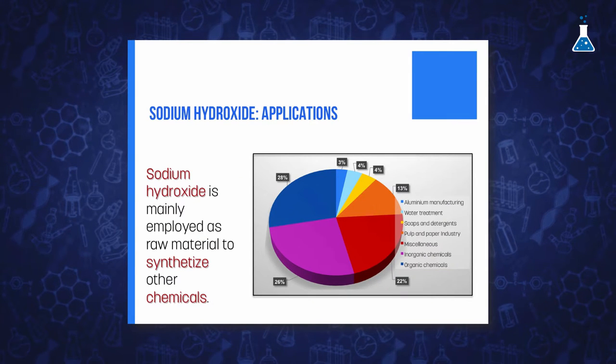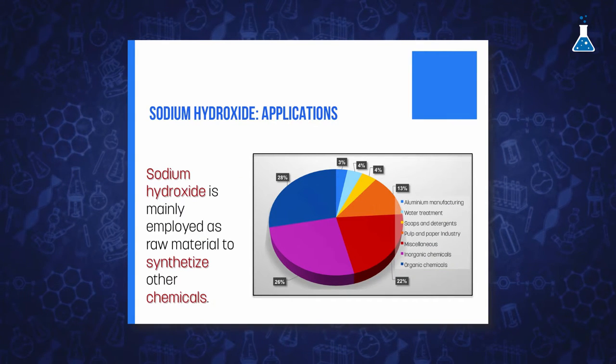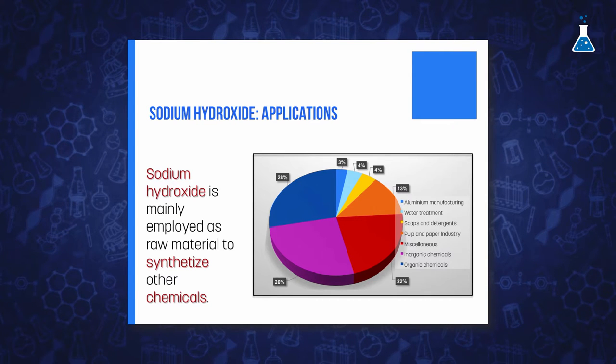This route allows to prepare very pure sodium hydroxide, although it has the problem that the process is accompanied by discharge of mercury into the environment, which is a source of mercury pollution.